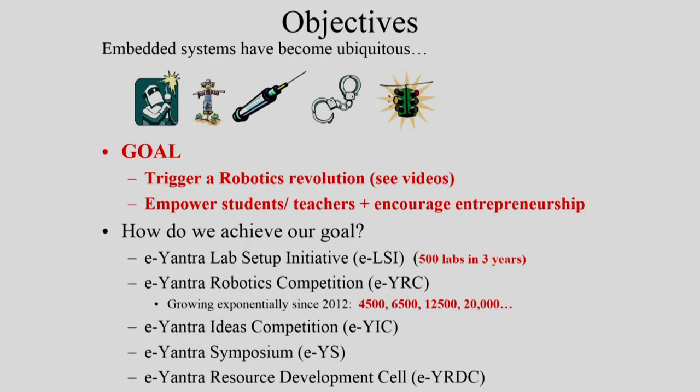The solution is theirs and the process is ours — we guide them through the various stages of solving a problem and they finally upload a video from which we choose the finalists who come to IIT Bombay. This has been an unparalleled success, growing exponentially: 4,500 students in 2012, then 6,500, then 12,500, and now almost 20,000 students this year.